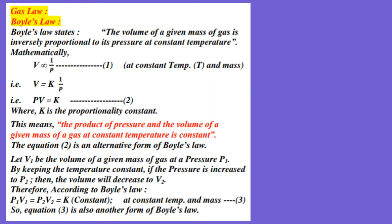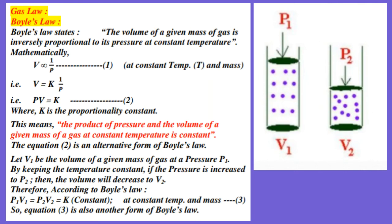This alternative form of Boyle's Law, PV equal to K, can be further defined as: let V1 be the volume of a given mass of gas at pressure P1. By keeping the temperature constant, if the pressure is increased to P2, then the volume will decrease to V2. So, according to Boyle's Law, P1V1 equal to P2V2 equal to K, meaning constant. This is at constant temperature and mass. This equation becomes equation number 3, and is also another form of Boyle's Law. So, Boyle's Law has 3 mathematical equations.